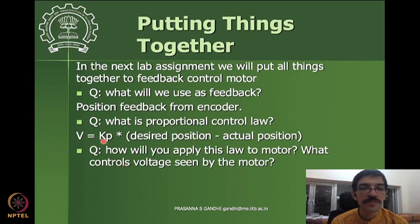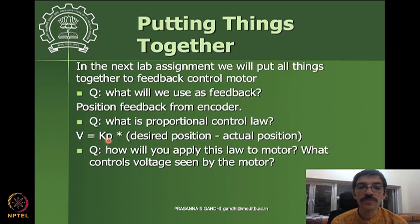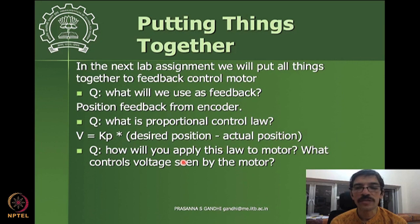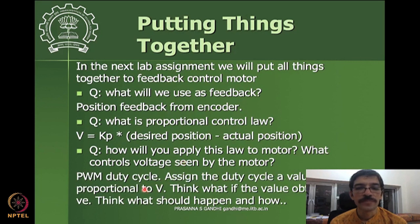This control expression may give a negative value depending on the inputs. Since PWM duty cycle only accepts positive values from 0 to 100, we need to handle this. If the computed control value is negative, we need to reverse the direction of the motor. You know how to do direction reversal — we need to use the IN_A and IN_B pins of the driver to change the direction of motion.